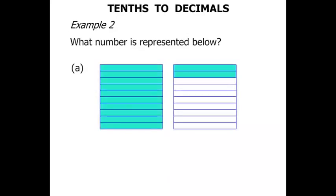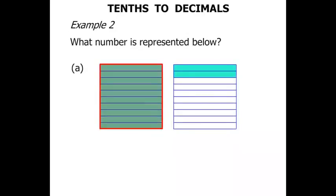Example 2 now. What number is represented below? Well we can see that first part that the whole lot is shaded in. We say that's 1. Then we've got 1, 2. 2 parts out of 10. That's 2 tenths. So we've got 1 and 2 tenths. And we can write that in decimal form as 1.2.